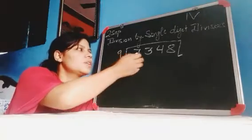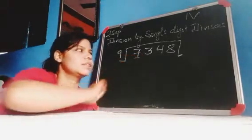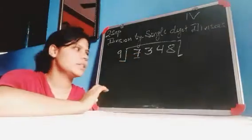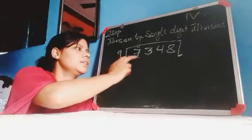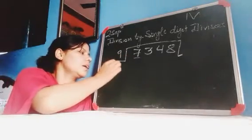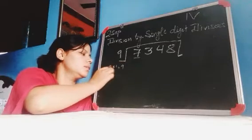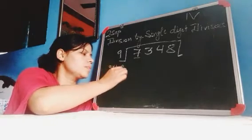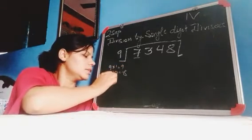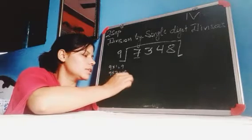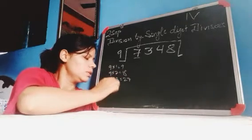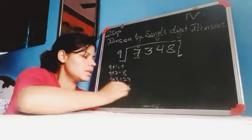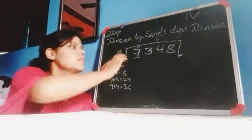You know the table of 9: 9 ones are 9, 9 twos are 18, 9 threes are 27, 9 fours are 36. First, you check single digit.